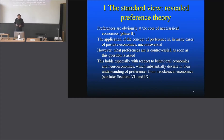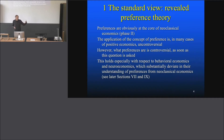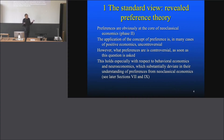That holds especially with respect to behavioral economics and neuroeconomics, which substantially deviate in their understanding of preferences from neoclassical economics. We'll see that in greater detail in sections 7 and 9, when I discuss behavioral economics and neuroeconomics — they have a substantial change in their understanding of preferences. But in order to understand that change, one first has to understand what the neoclassical economics view on preferences is — that's the standard view, revealed preference theory, which I'm presenting now.